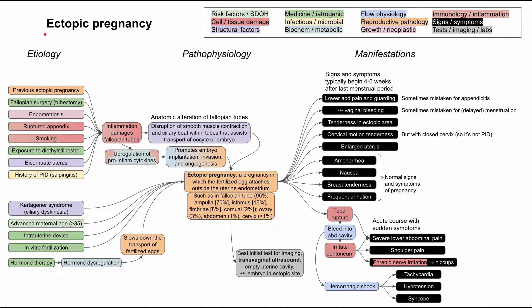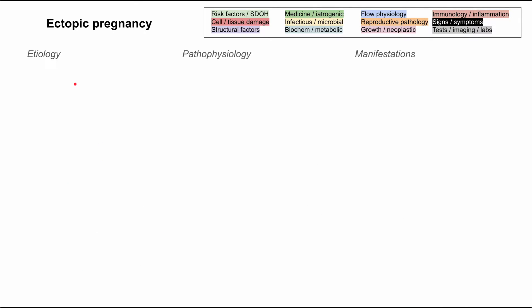This is a mechanism of disease map for ectopic pregnancy. I'll be talking about the etiology, the pathophysiology, and the manifestations of ectopic pregnancy. Each of these boxes is color-coded according to the legend in the top right, and I'll be clearing all the boxes and repopulating the flowchart one by one as we talk about each concept. Let's go ahead and get started.